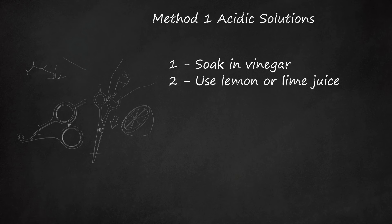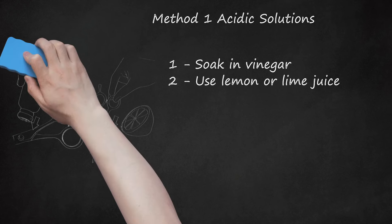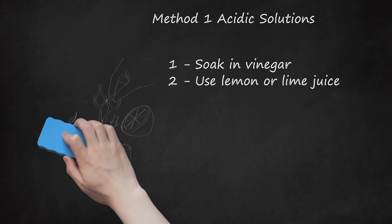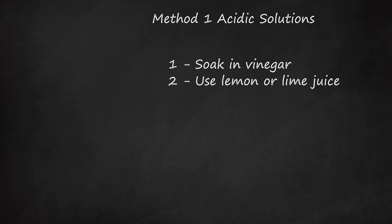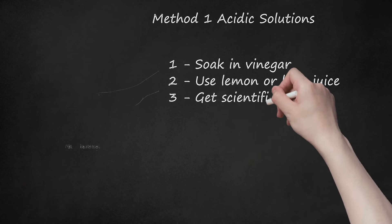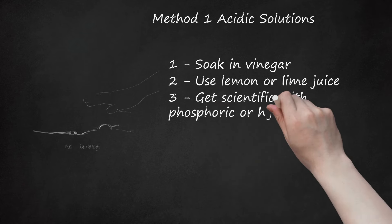Second, use lemon or lime juice. Lemon or lime juice works particularly well for rust stains on clothing, but it can also be effective on metal if left to work for long enough time. Sprinkle salt over the rusted area, let soak with lemon or lime juice, and then scrape away with a crumpled up aluminum ball.